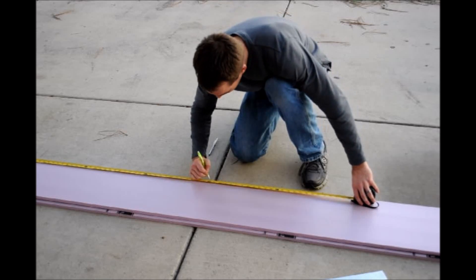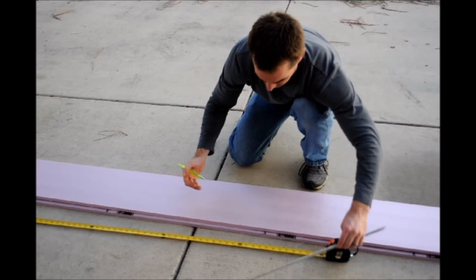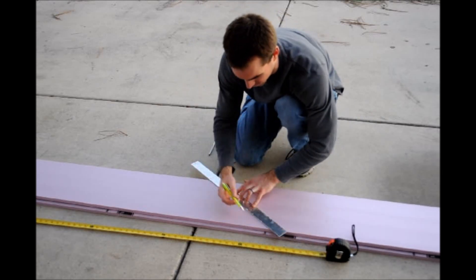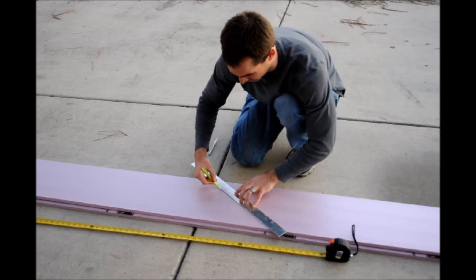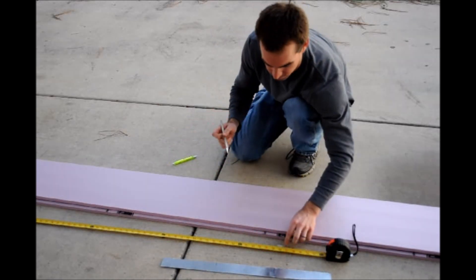Measure out 4 feet along the other edge and draw a line connecting the points. Cut along the line using your X-Acto knife.